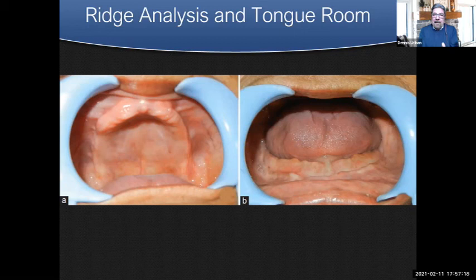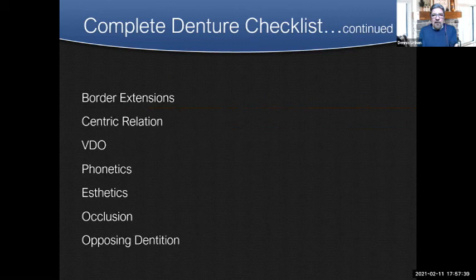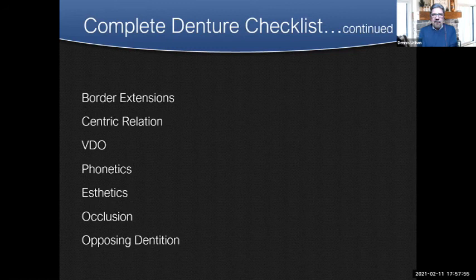I tell technicians when training: when you're finishing cases, take into consideration that the patient needs room for the tongue. We'll mention some aesthetic aspects later on — especially on the upper maxilla — including denture tooth position on the lingual for better phonetics. We need to look at border extensions, centriculation, VDO, phonetics, aesthetics, occlusion, and opposing dentition. If you take all of this into consideration, you're going to have a successful denture, and you have to communicate this to the laboratory so they can make the denture accordingly.